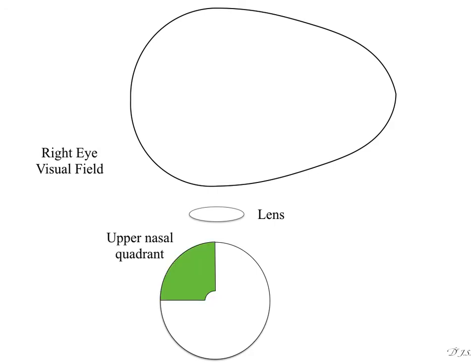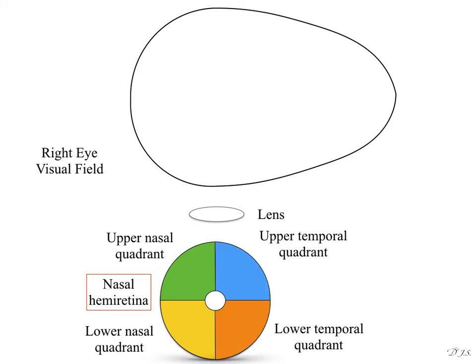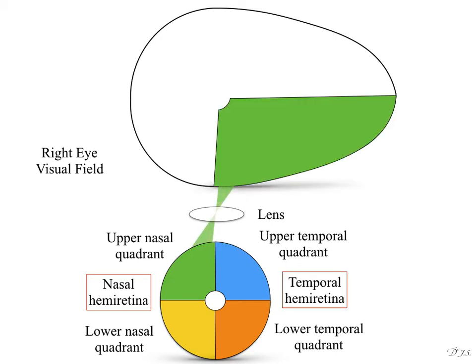The upper nasal quadrant and lower nasal quadrant together form the nasal hemiretina. On the other side, the upper temporal quadrant and lower temporal quadrant form the temporal hemiretina. The upper nasal quadrant looks at the lower temporal quadrant of the visual field, and the lower nasal quadrant looks at the upper temporal quadrant. The nasal hemiretina looks at the temporal region of the right eye visual field.